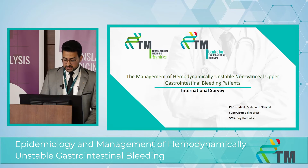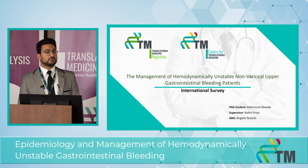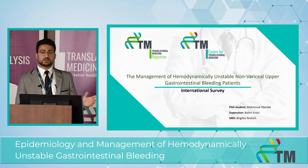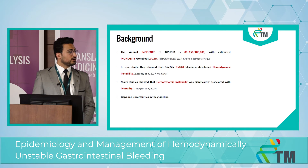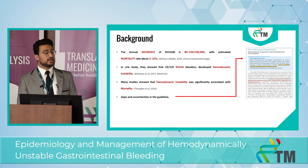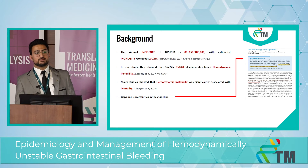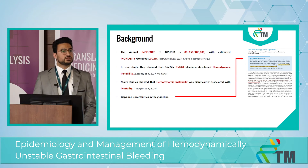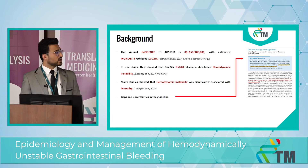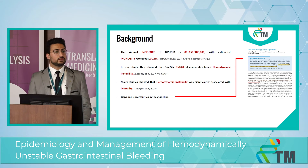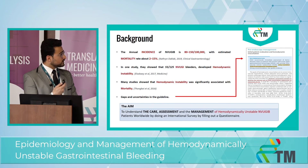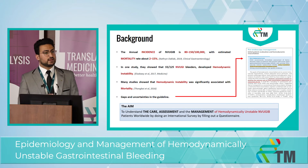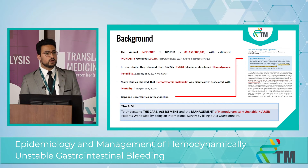My second project is an international survey about the management of hemodynamically unstable non-variceal upper GI bleeders, since variceal bleeding is a different clinical scenario. The background is similar to the first project, with the addition that the most recent ESGE guideline clearly states there are gaps in pre-endoscopic management of hemodynamically unstable patients — including what type of fluid to use, the optimal rate, and whether aggressive or restrictive resuscitation is preferred. An international survey will help better understand care and management of those patients.